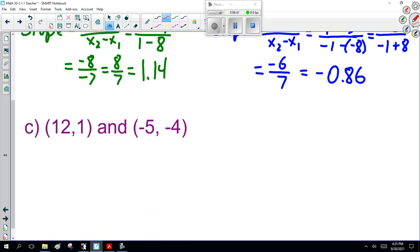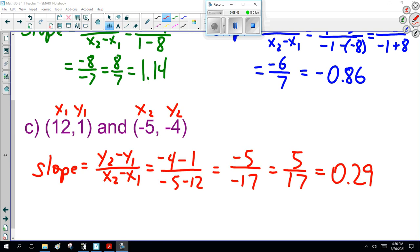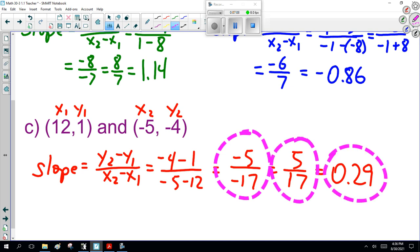For the final one, slope is y2 minus y1 over x2 minus x1. Minus 4 minus 1 is minus 5. Minus 5 minus 12 is minus 17. I get minus 5 over minus 17. However, traditionally, two minus signs cancel out. So I get 5/17, or 0.29. I'll accept all of those answers because technically they're all correct.